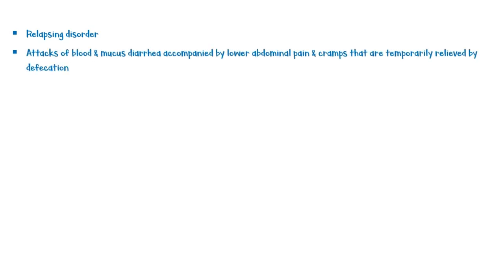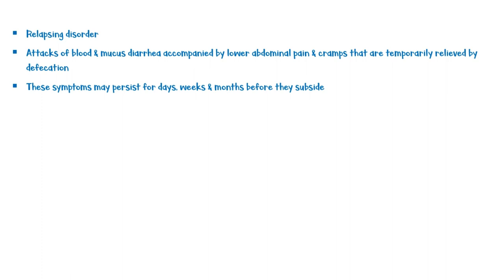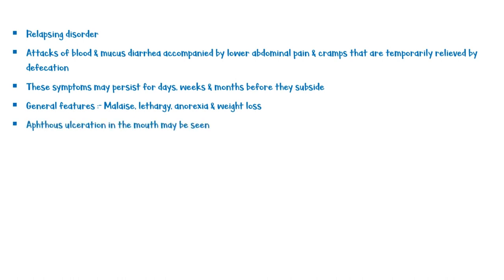Ulcerative colitis is a relapsing disorder characterized by attacks of blood and mucous diarrhea, accompanied by lower abdominal pain and cramps that are temporarily relieved by defecation. These symptoms may persist for days, weeks, or even months before they subside. General features like malaise, lethargy, anorexia, and weight loss may also be present. Aphthous ulceration in the mouth may also be seen. In most patients, it runs a course of remissions and exacerbations.